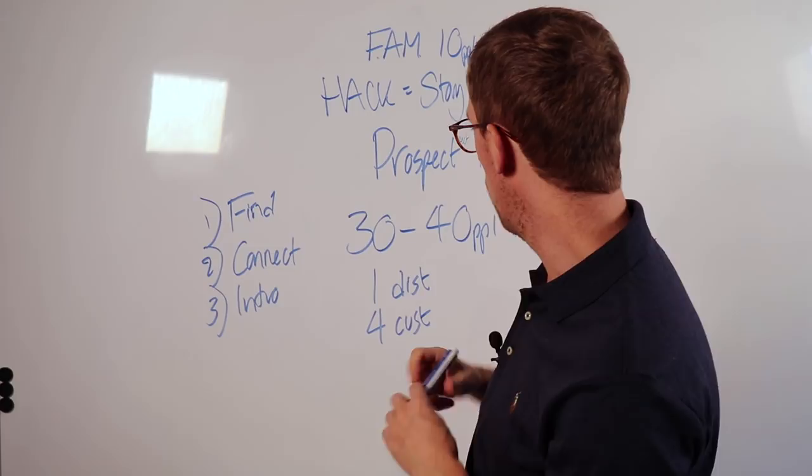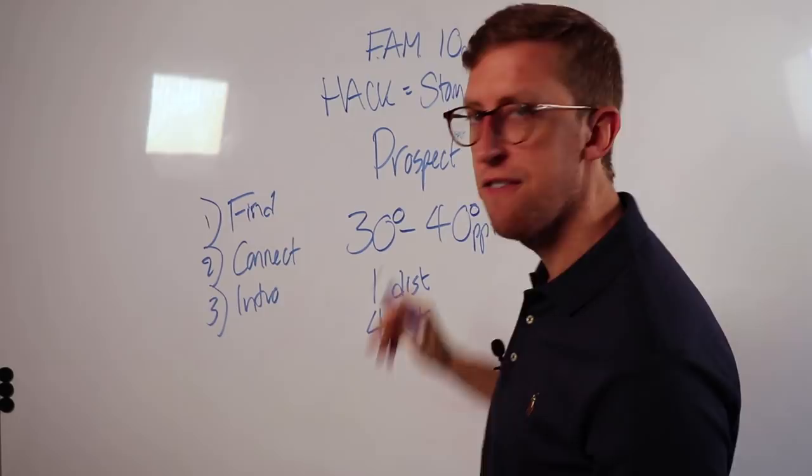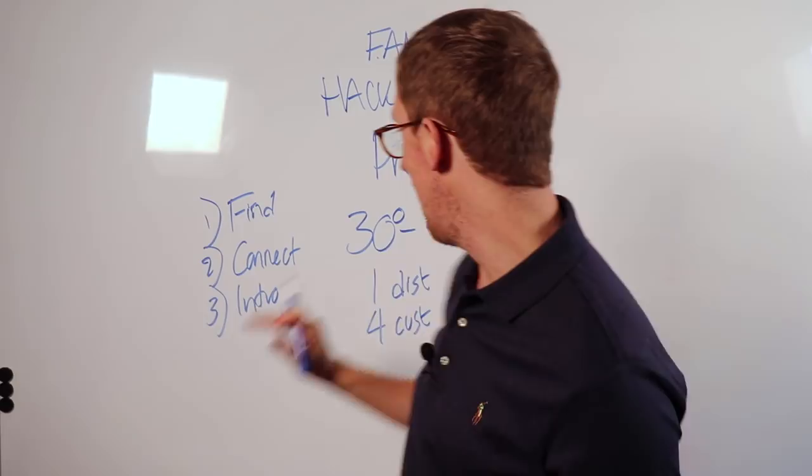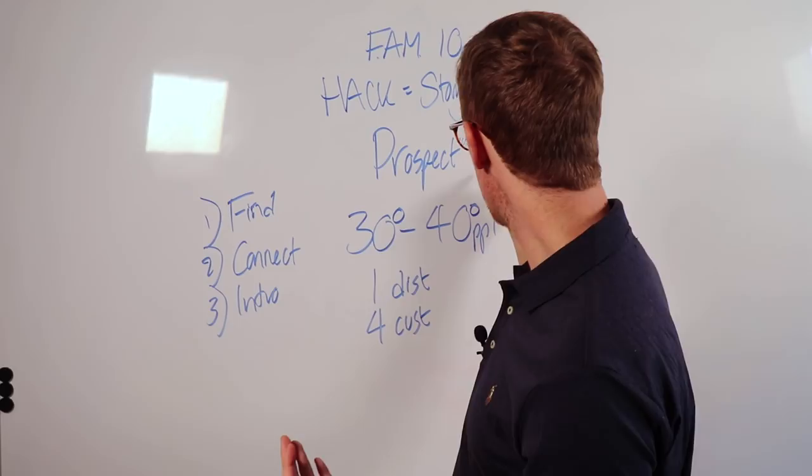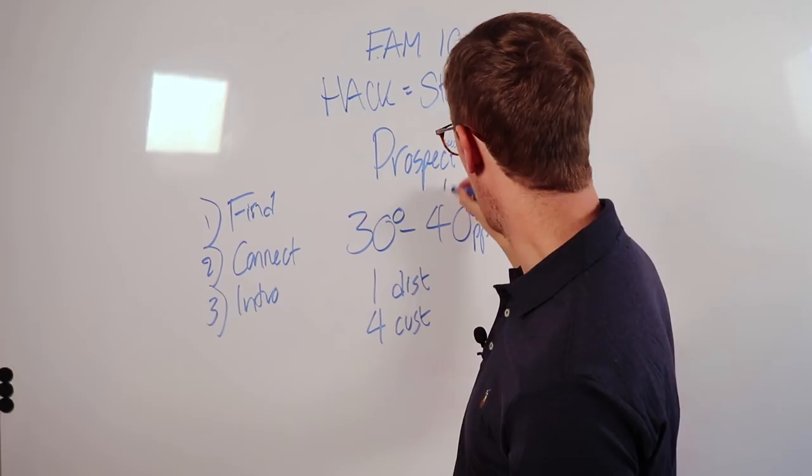If we find, add, and message 10 people, we'll have one conversation. So in order for us to get 30 to 40 conversations, we're going to need to add a zero to these numbers. We're going to have to find, add, and message 300 to 400 people in a week to have 30 to 40 people in conversation with. But the goal was 10 people, right? So we're going to need to find, add, and message 100 people.